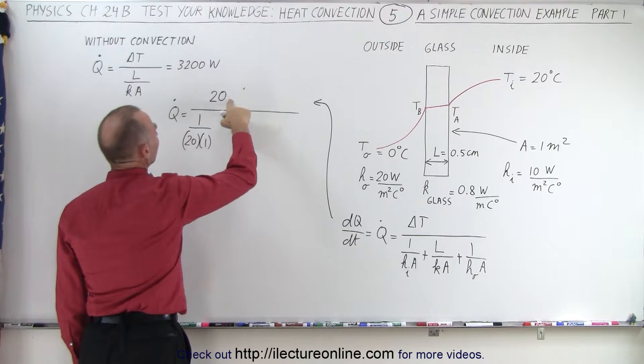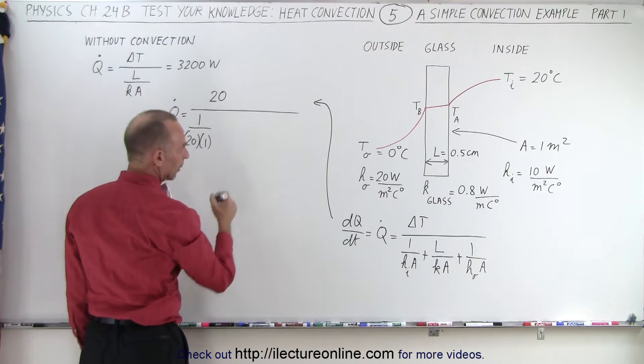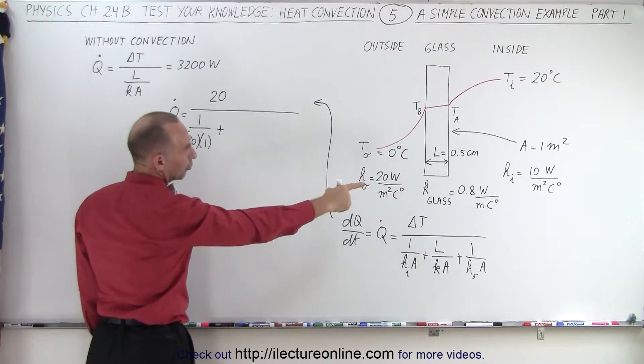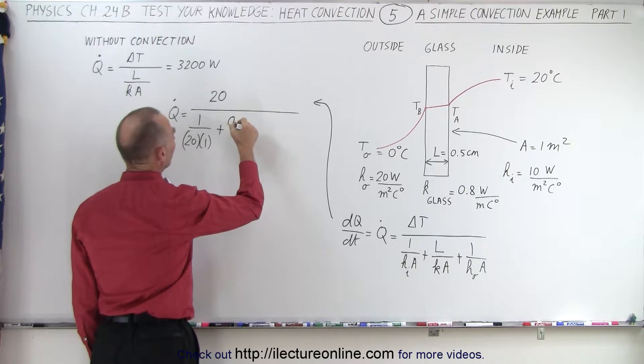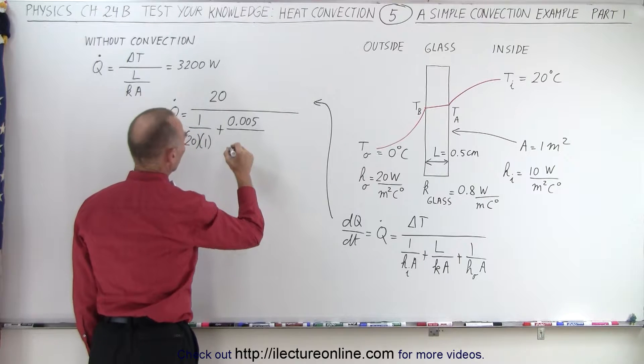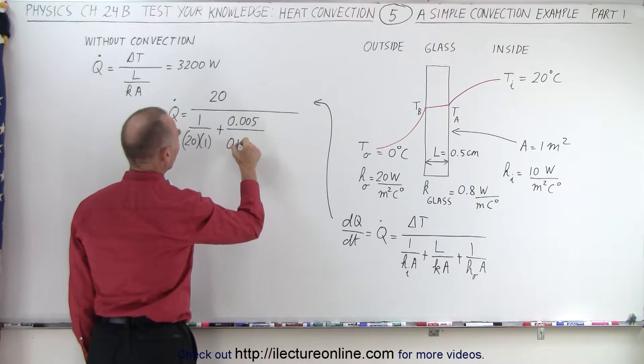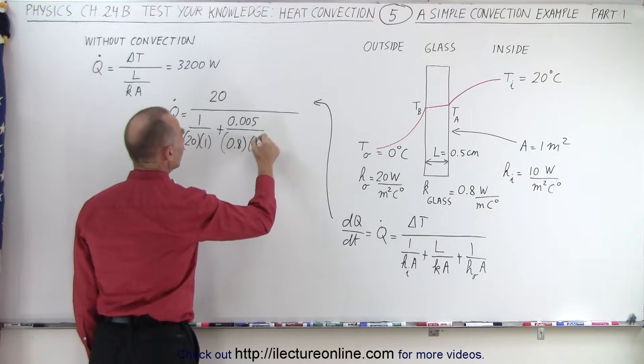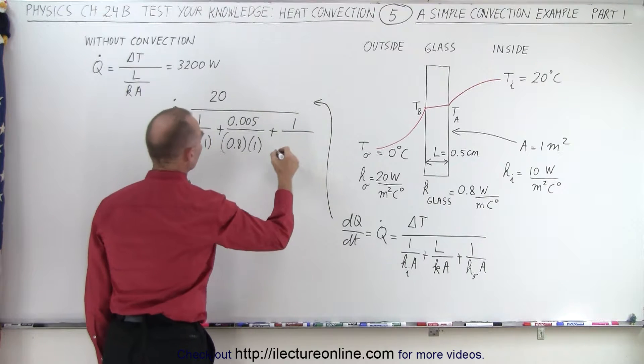And then we have, plus, converted to meters for the width is 0.005 divided by one over k, which is 0.8 times one square meter.